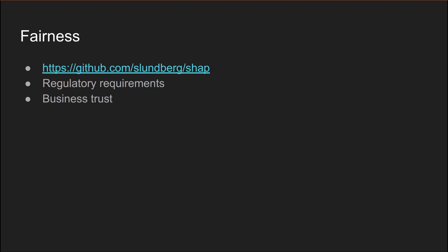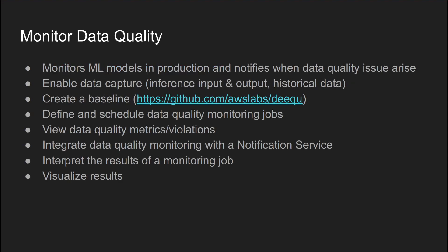Questions of model fairness and explainability are on the front line in recent years. A lot of governmental regulators require capabilities for in-place audit of any piece of the ML pipeline. Having high explainability also allows you to gain business trust more quickly. Bias — or absence of bias — is extremely important to stop discrimination based on race, gender, age, religion, and other sensitive attributes.